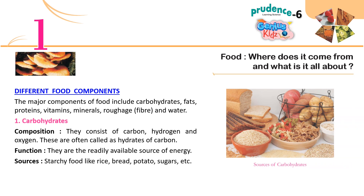Different food components: The major components of food include carbohydrates, fats, proteins, vitamins, minerals, roughage, fiber and water. 1. Carbohydrates — Composition: They consist of carbon, hydrogen and oxygen, and are often called hydrates of carbon. Function: They are the readily available source of energy. Sources: Starchy foods like rice, bread, potato, sugars, etc.